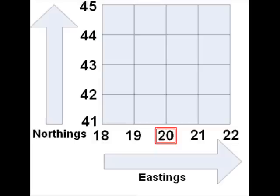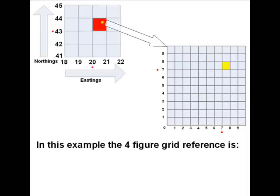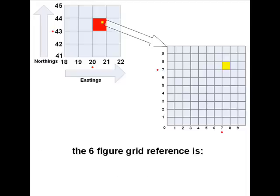If we have two digits in a grid reference — one figure from the eastings (along the corridor) and one figure from the northings (up the stairs) — this represents an area of one kilometer square. If we zoom in and write more figures for the eastings and northings we can make a much more precise grid reference. In each case half the digits come from the eastings and the second half represent the northings.